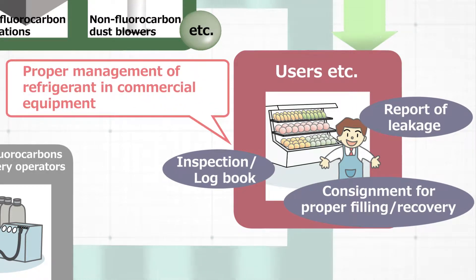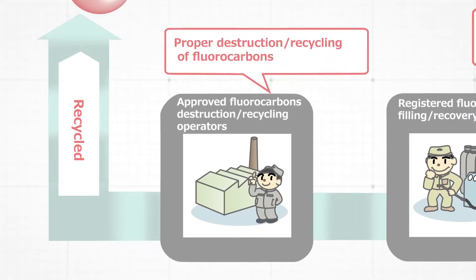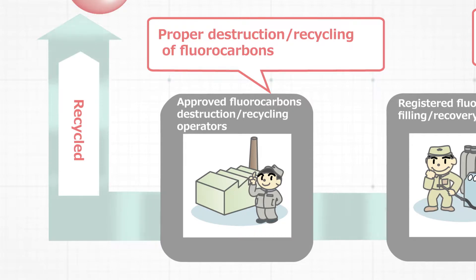Users of commercial refrigerators, freezers, and air conditioning equipment using fluorocarbon are required to maintain a practice of equipment inspection and reporting, consignment of appropriate filling or recovery of fluorocarbon, and reporting fluorocarbon leakage to related ministries when leakage exceeds a certain amount. Approved filling and recovery operators must fill and recover fluorocarbon in accordance with national criteria, and if not recycling it themselves, must deliver it to a recycling or destruction operator. Approved destruction or recycling operators are required to recycle and destruct fluorocarbon in accordance with national criteria and regulations.